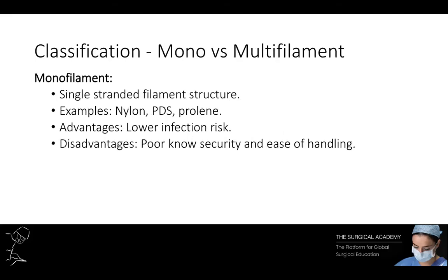Sutures can also be subclassified according to their structure. Monofilament sutures are a single-stranded filament suture. Examples include nylon, PDS, and prolene. They have a lower infection rate, but do not secure the knot well and have poor ease of handling.